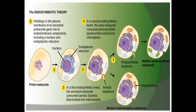This is the endosymbiotic theory of mitochondria. The infolding of the plasma membrane of an ancestral prokaryote gave rise to endomembrane components, including a nucleus and endoplasmic reticulum. This is the pro-eukaryote, from which we can see the development of the endoplasmic reticulum. In the first endosymbiotic event, the ancestral eukaryote consumed an aerobic bacterium that evolved into the mitochondria.